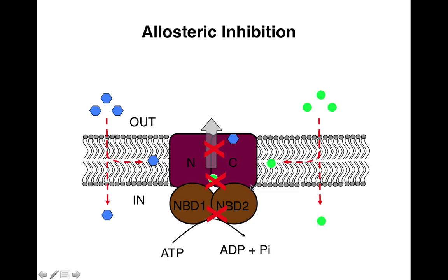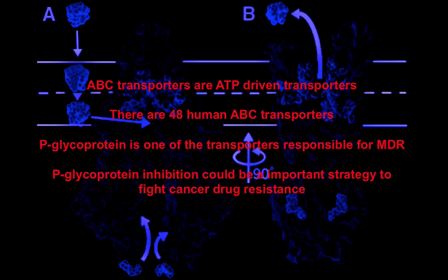In summary, ABC transporters are ATP-driven transporters. There are 48 human ABC transporters. P-glycoprotein is one of the transporters responsible for multi-drug resistance in cancer cells, and PGP inhibition can be an important strategy to fight cancer drug resistance.